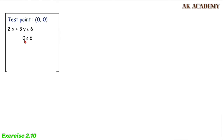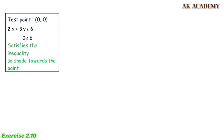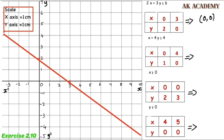Now we test the origin point (0,0). Substituting into the inequality: 0 plus 0 equals 0, which is less than 6. So the inequality is satisfied at the origin. This means we shade the region on the origin side of the line.